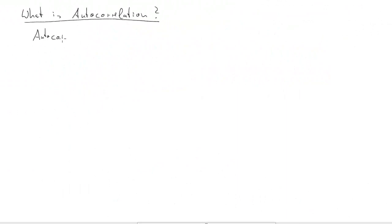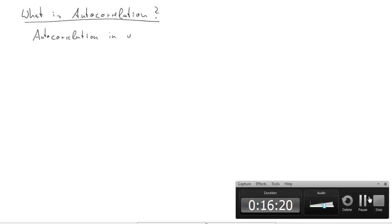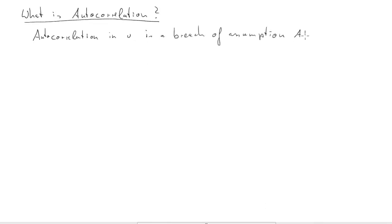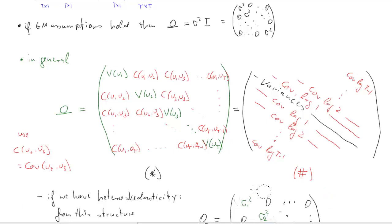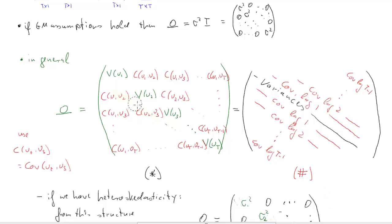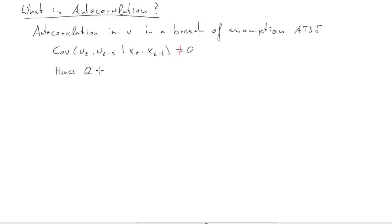So what about autocorrelation? Autocorrelation in the error vector u constitutes a breach of time series assumption 5. Recall, time series assumption 5 related to the covariance between ut and ut minus s, conditional on the x's, and that was unequal to 0. What does that mean? It means that all these red bits here, in our generic variance-covariance matrix, that these guys don't fall away to 0.